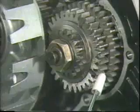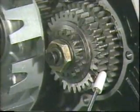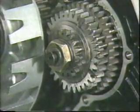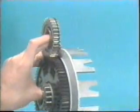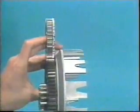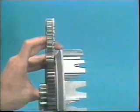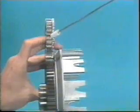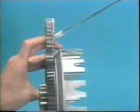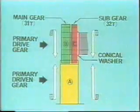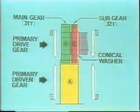We will now take some time to explain the friction gear. The primary drive gear consists of two gears having different numbers of teeth. For the purpose of this service video, we will call the driven gear A, the main drive gear B, and the sub-gear C. Gear C is free of gear B; it is held in place only by the friction force of the conical washer. As the crank rotates, gear B drives A.